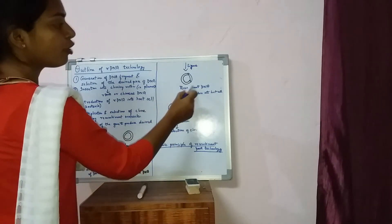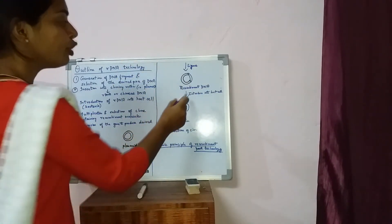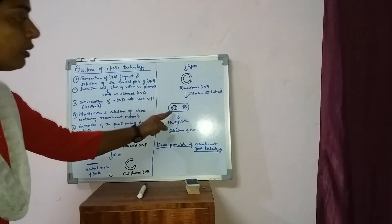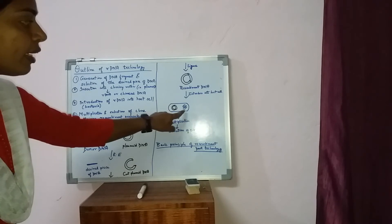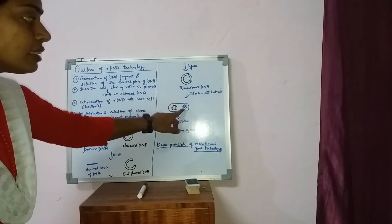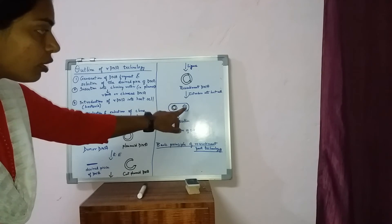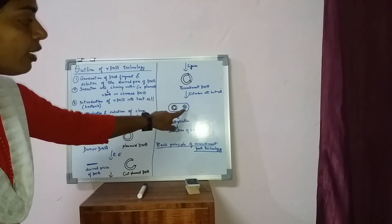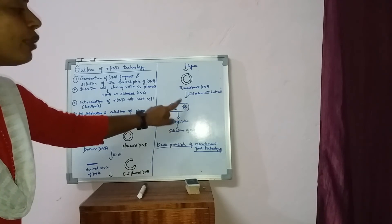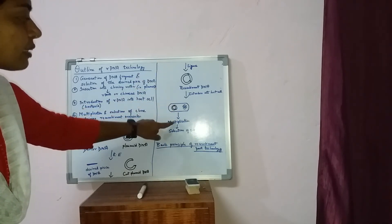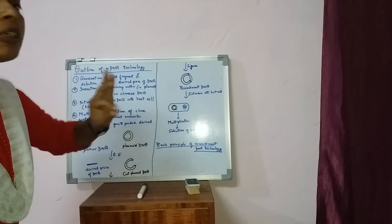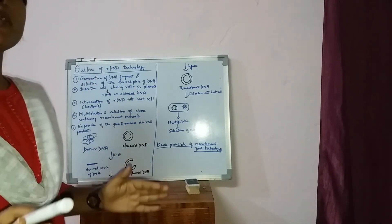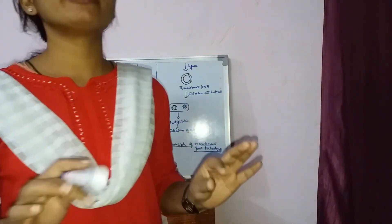Now we will introduce this recombinant DNA and chimeric DNA into the host cell. This is nothing but our recombinant DNA, and this is the genetic material of E. coli. This is the basic principle of recombinant DNA technology.